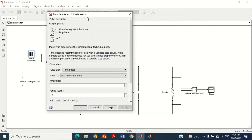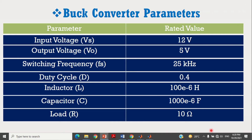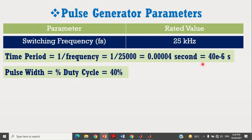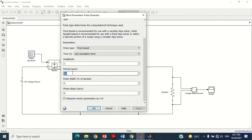Double click on the pulse generator block to set the values. According to data, the switching frequency is 25 kHz, so the time period will be equal to 40 microseconds. The duty cycle is given as 0.4, so the pulse width percentage will be equal to 40%. Put 40 microseconds for the period and 40% for the pulse width, then press OK.